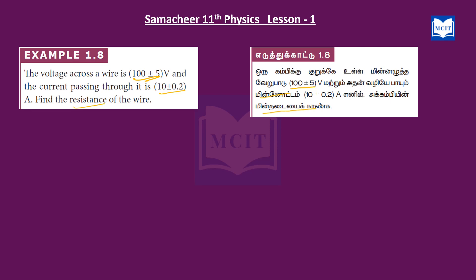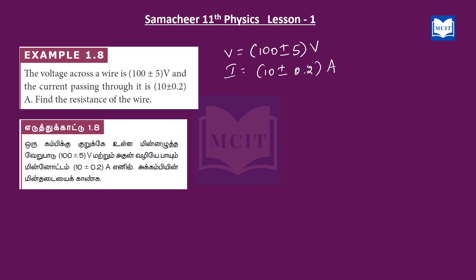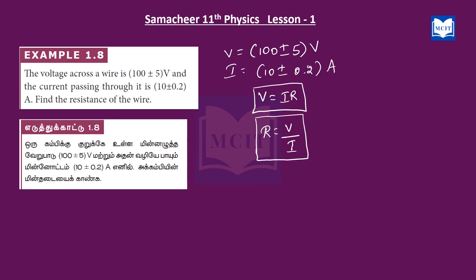So the given information: voltage V equals 100 plus or minus 5 volt, and current I equals 10 plus or minus 0.2 ampere. We have the resistance formula V equals IR, so R equals V divided by I. Since I is in the denominator, R equals V by I.